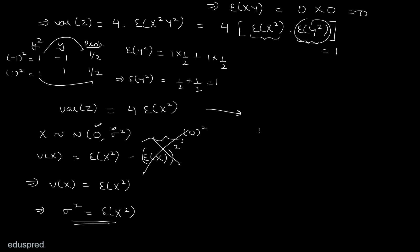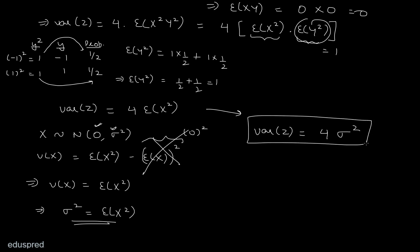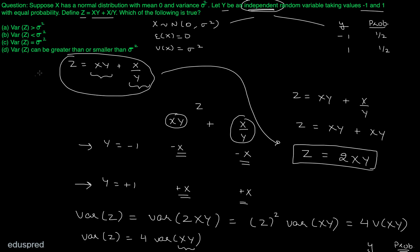So the final expression for variance of z equals 4 times sigma squared. That means the variance of z is four times the variance of x, so the variance of z is greater than sigma squared. Looking at the options, the right answer is option A, which says the variance of z is going to be greater than sigma squared. That's all for this question.